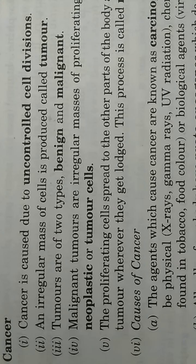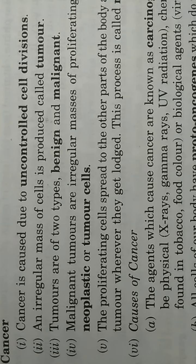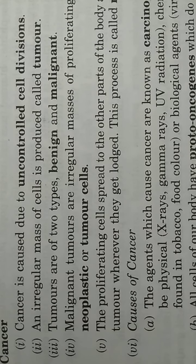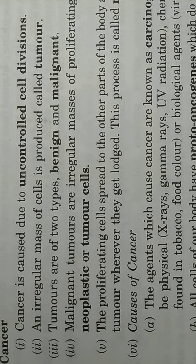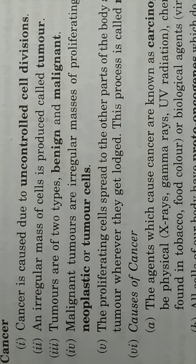An irregular mass of cells is produced called tumor. इस uncontrolled cell divisions की वजह से cells का एक बहुत बड़ा irregular, बेडौल सा mass produce होने लगता है शरीर में, जिसको की tumor कहा जाता है।